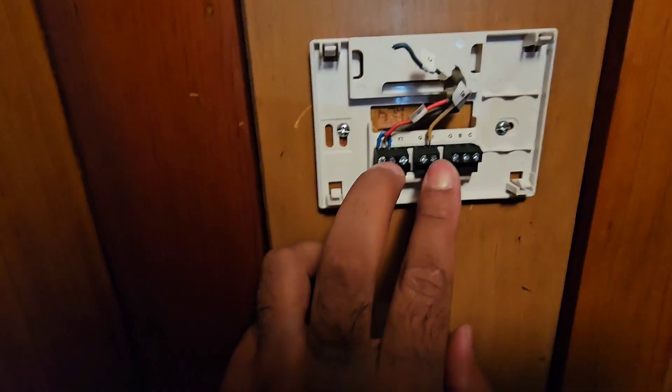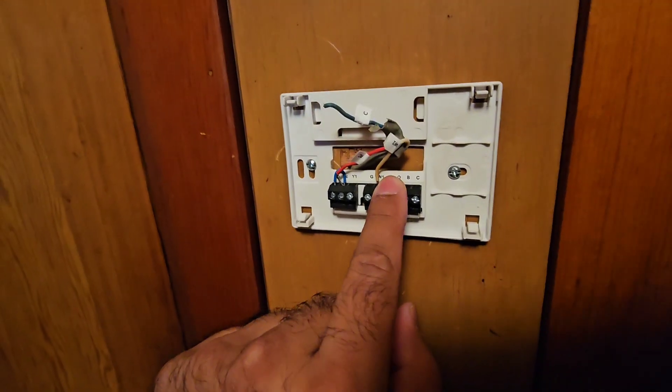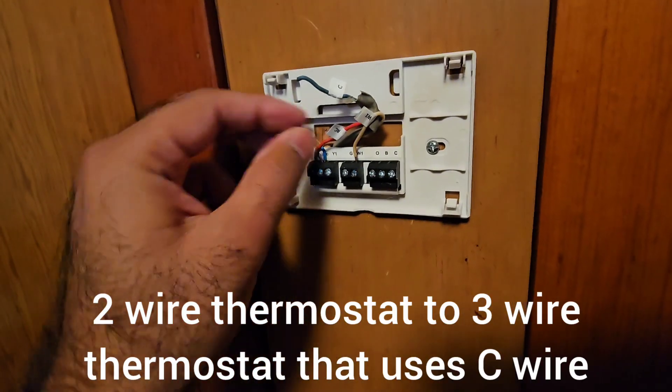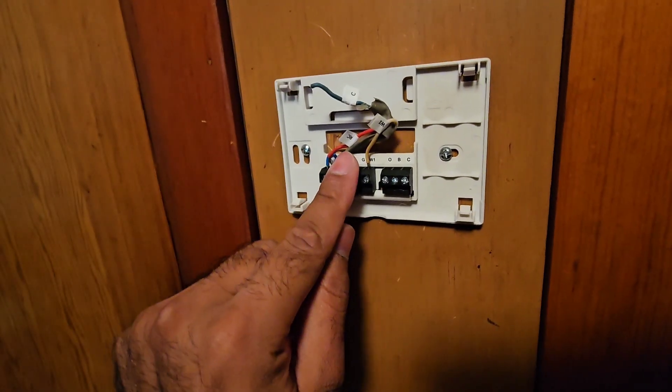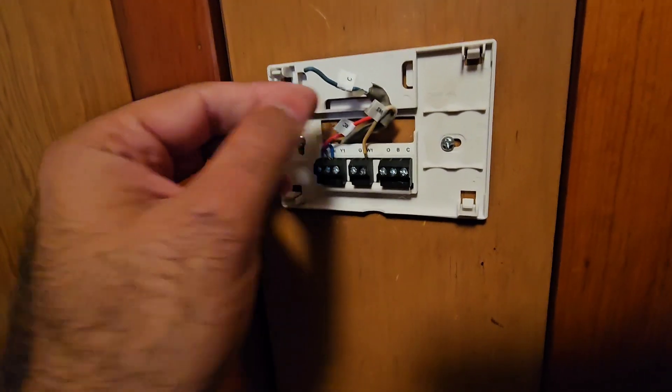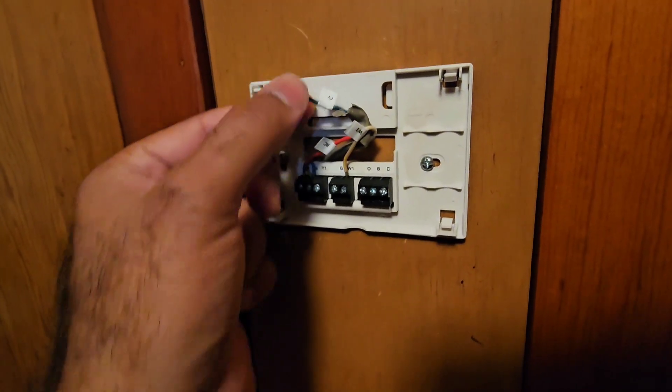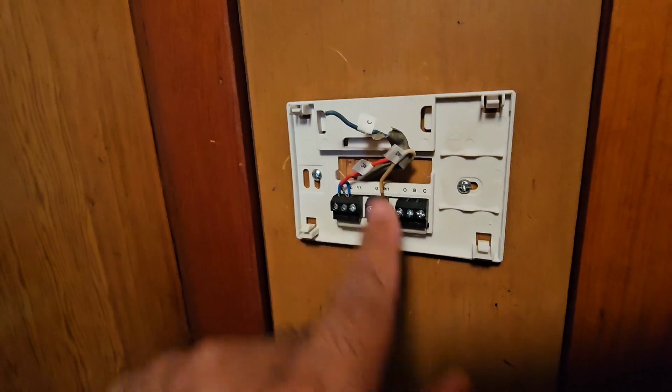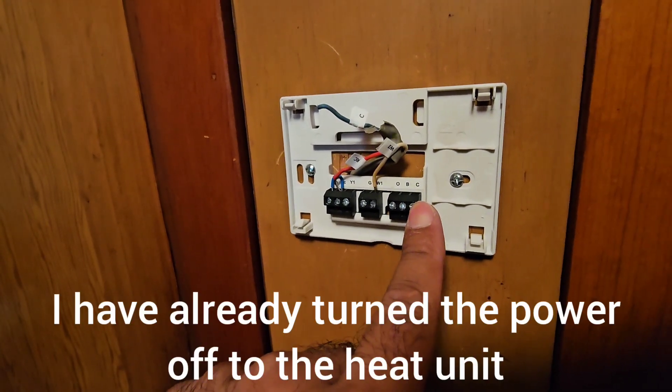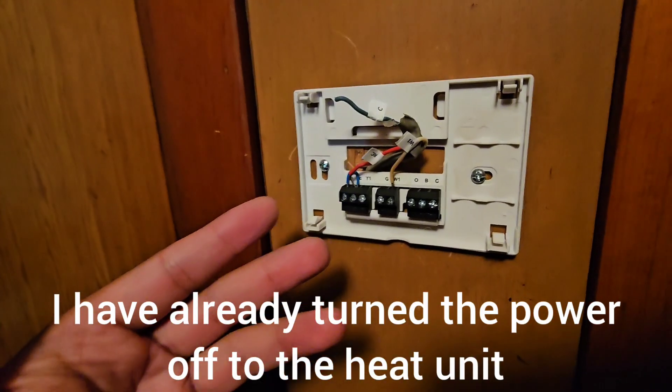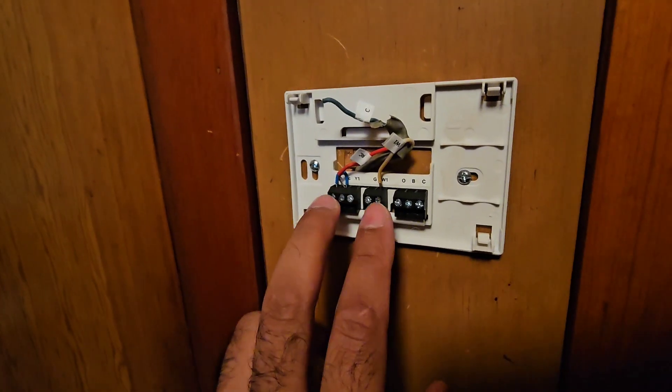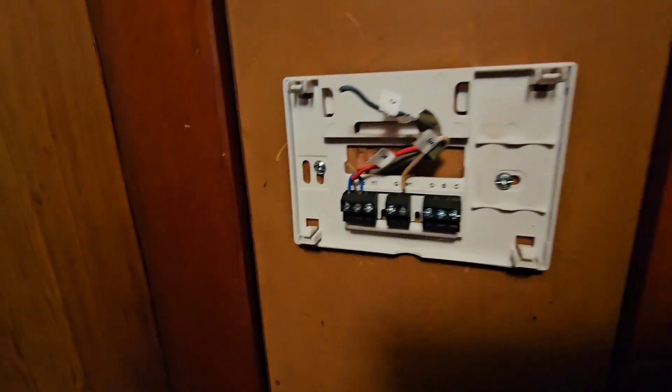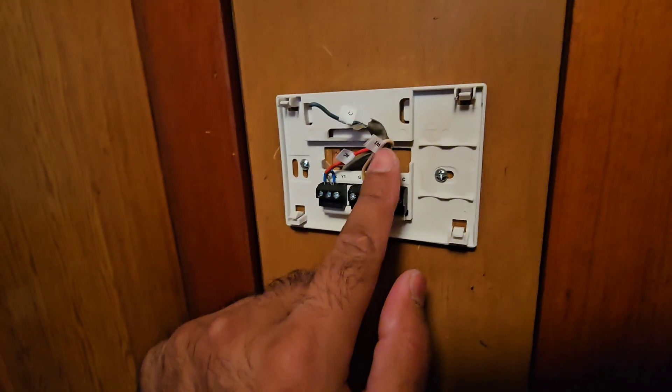The two wires coming into the system right now are W and R, so I marked them W for white and R for red. The C wire is supposedly the blue one based on my research. The C wire should have been here if it was getting used, but the thermostat that was already there only used W and R.